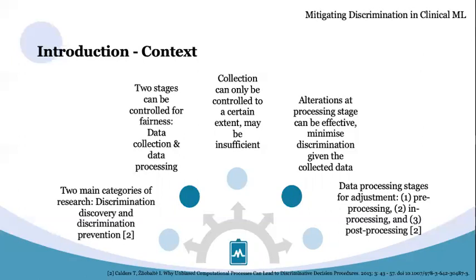Regarding data processing, there are three major stages at which adjustments may be made: pre-processing, in-processing and post-processing. The focus of this research was on comparing algorithmic techniques for each of the three processing stages, and this is done by applying them to a known discriminatory clinical resource allocation algorithm.